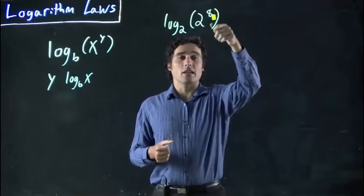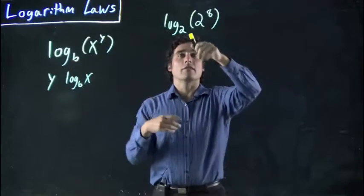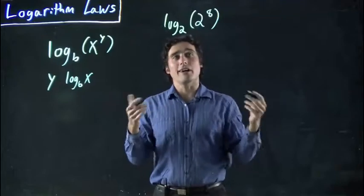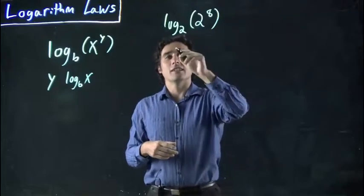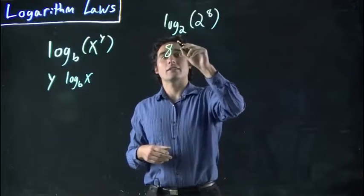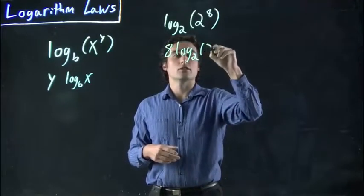I can multiply this out, get a huge, awkward, ugly number, and then figure out 2 to the power of what is this. But, hopefully you're starting to see this is going to simplify very easily. Because I can rewrite this as 8 log base 2 of 2.